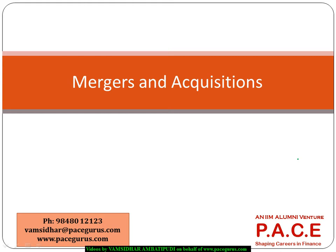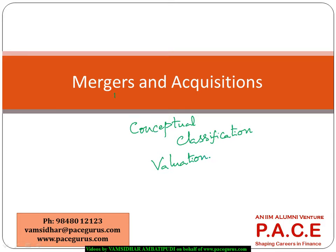In this session, let's look at mergers and acquisitions — the conceptual aspects, the different forms of mergers, and how to classify them on various grounds. Along with that, we'll look at the valuation aspects behind mergers: how target companies are evaluated, and how benefits are distributed between the target and the acquiring company. These are the preliminary concepts and basic mathematical calculations behind mergers and acquisitions.